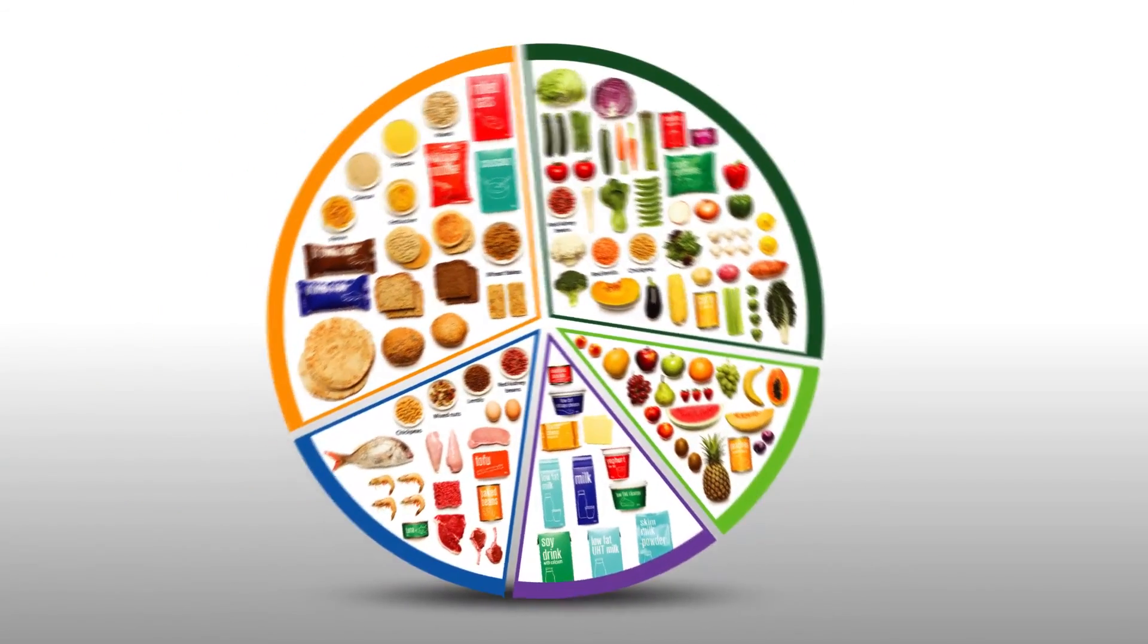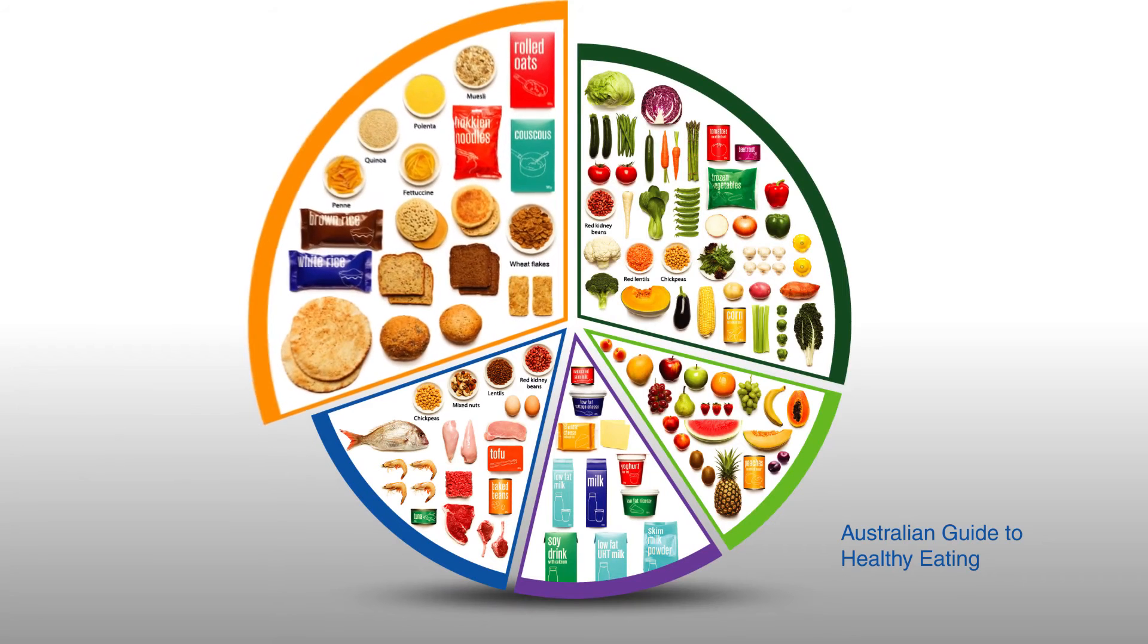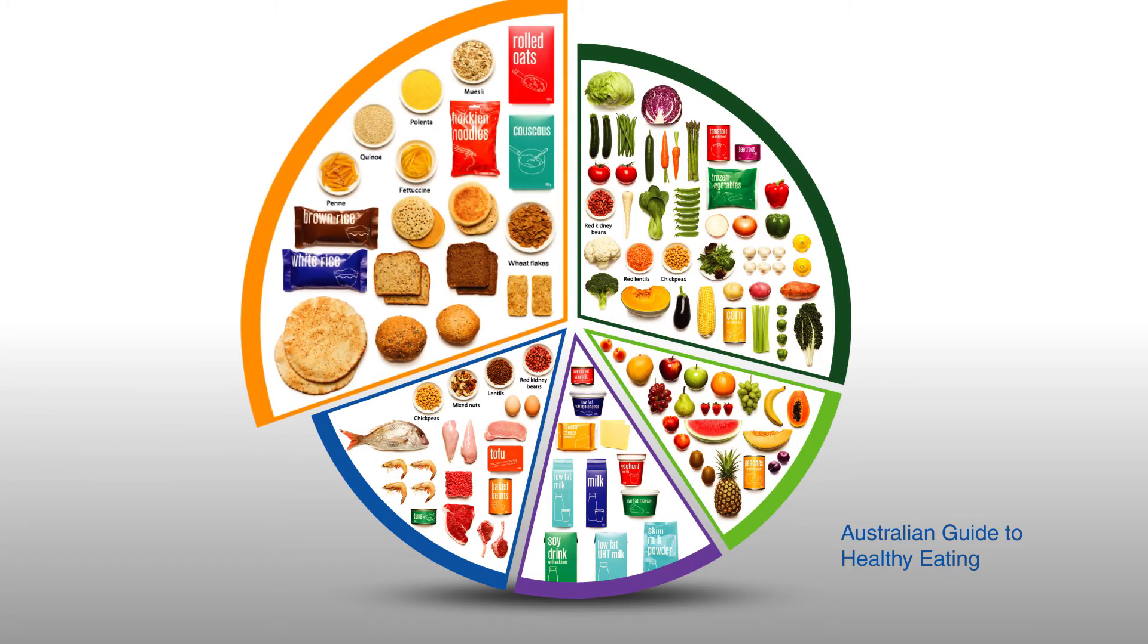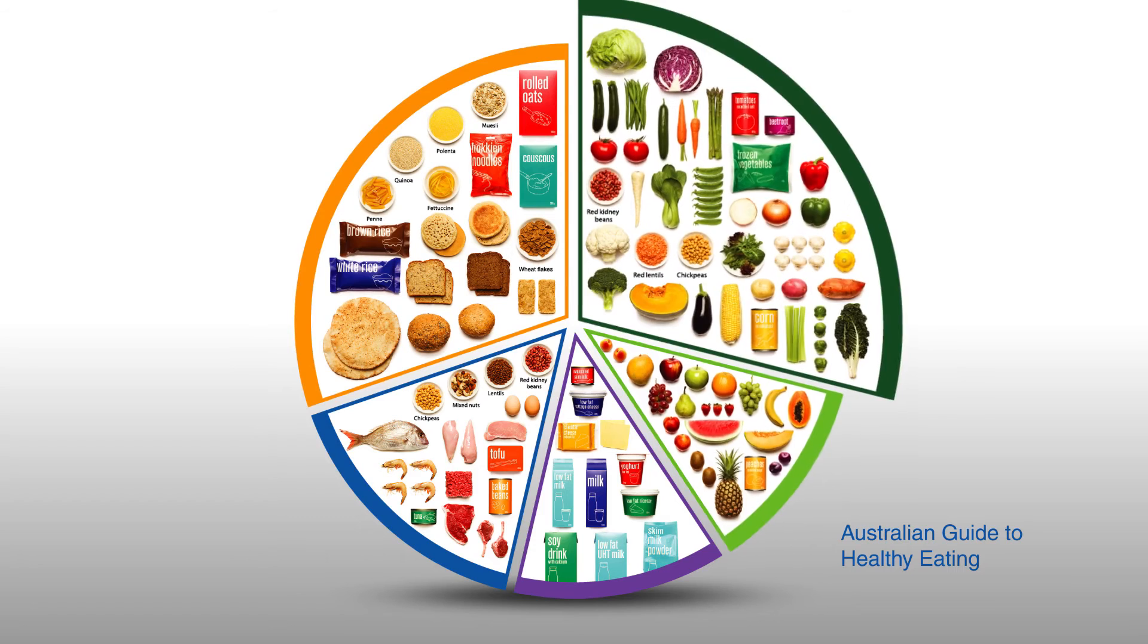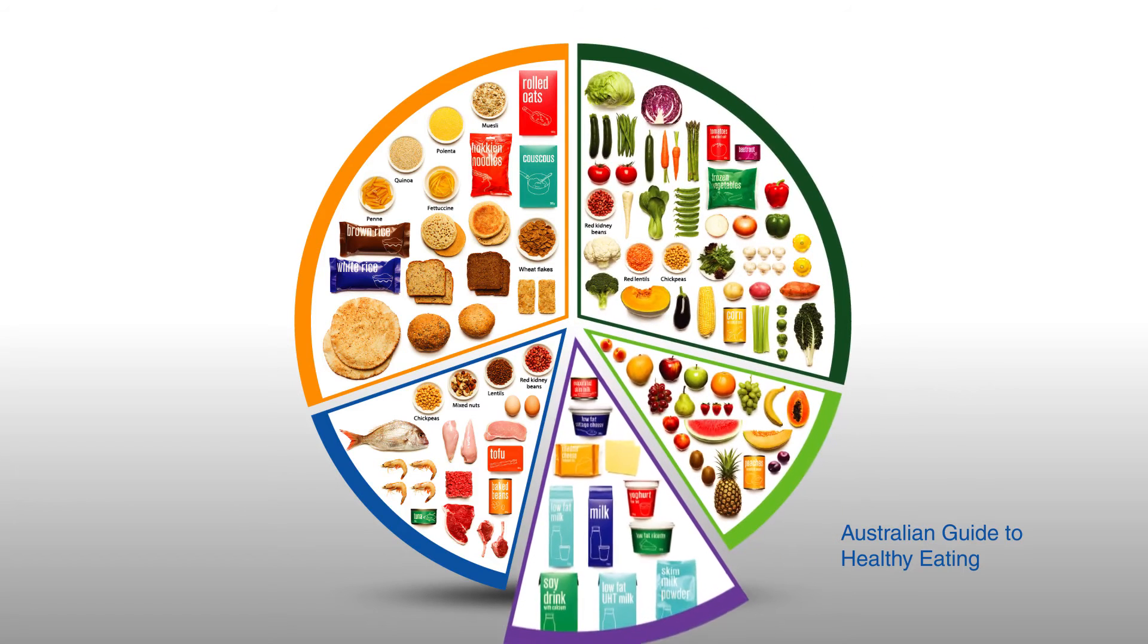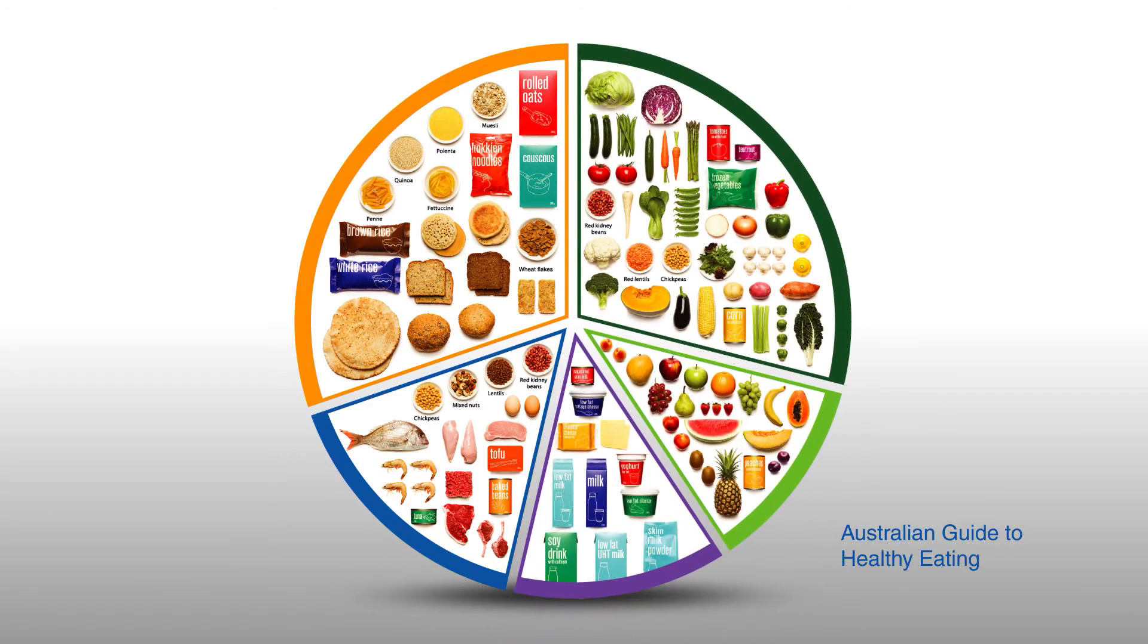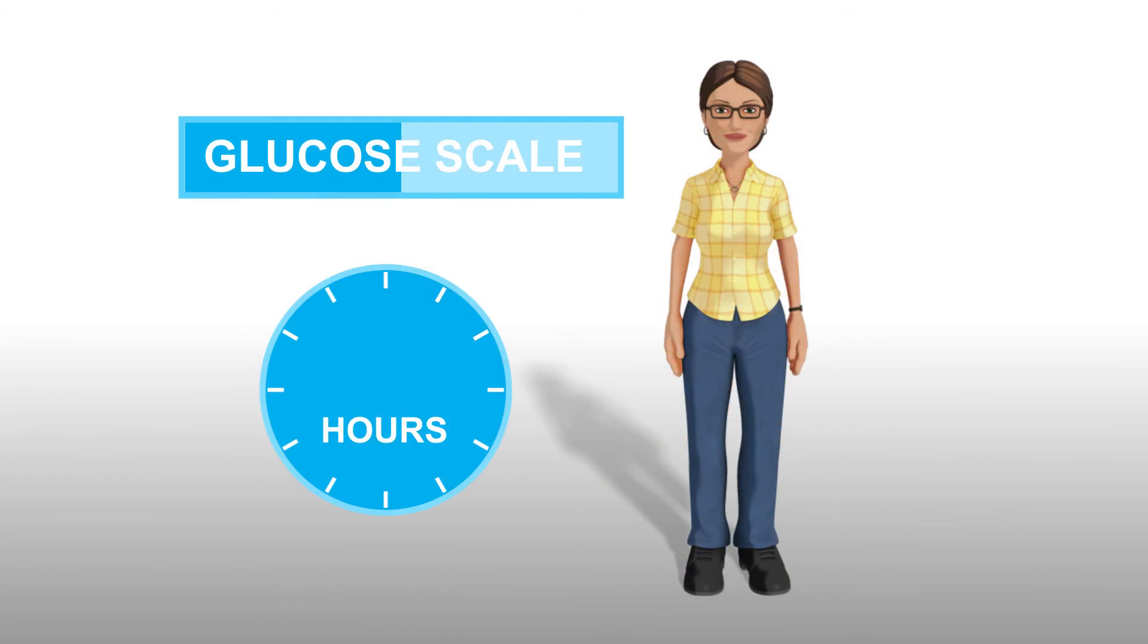To understand this, let's look at what foods contain carbohydrates: grain foods such as bread, cereals, pasta, noodles, rice, and quinoa; starchy vegetables like potato, sweet potato, corn, and legumes; fruit; milk and yogurt; and cakes, biscuits, ice cream, chocolate, and chips. Remember that all carbohydrates within food are broken down to glucose or a simple sugar within 2 hours of digestion.